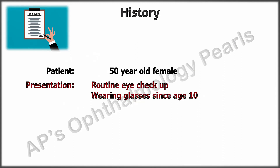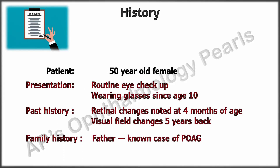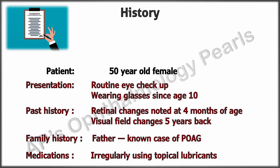A 50-year-old female came for a routine eye checkup. She has been wearing glasses since the age of 10. At the age of 4 months, her mother noticed some intermittent squint and took her for an eye checkup, where the ophthalmologist noted retinal changes but advised no concern. Her father is a known case of primary open-angle glaucoma. Five years back, she was told her fundus had some changes, but intraocular pressure was normal and field changes were non-glaucomatous. She is currently not on any topical medications apart from occasional artificial tears for dry eye.